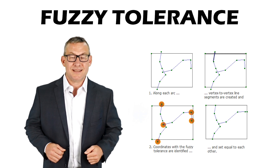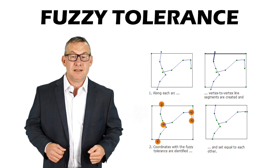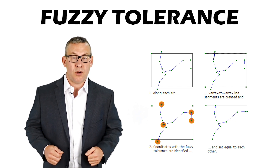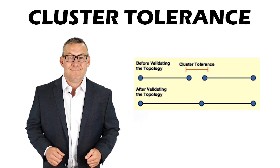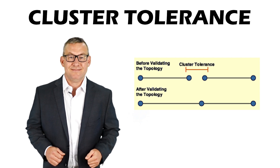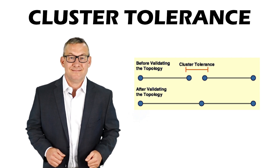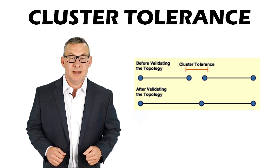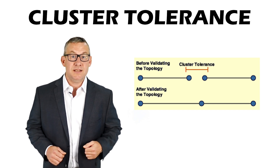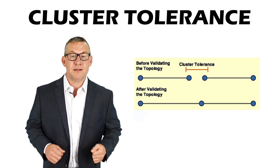Fuzzy tolerance is the distance at which two points are considered the same. Cluster tolerance is the minimum tolerated distance between vertices in a topology. Vertices within the cluster tolerance are snapped together.